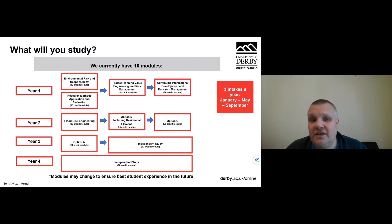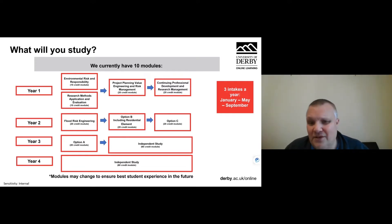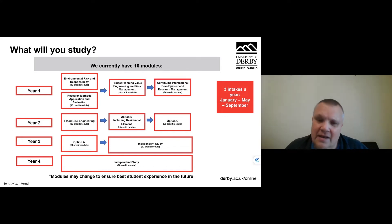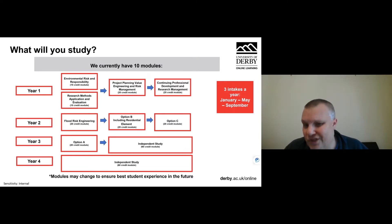Moving into year two, you would do your flood risk engineering, which is also a core module, and then your option B module. Depending on where you're starting from depends on which cycle you are with the options. And then in the summer, if you wanted to pick up an option, you could do something from option pool C.